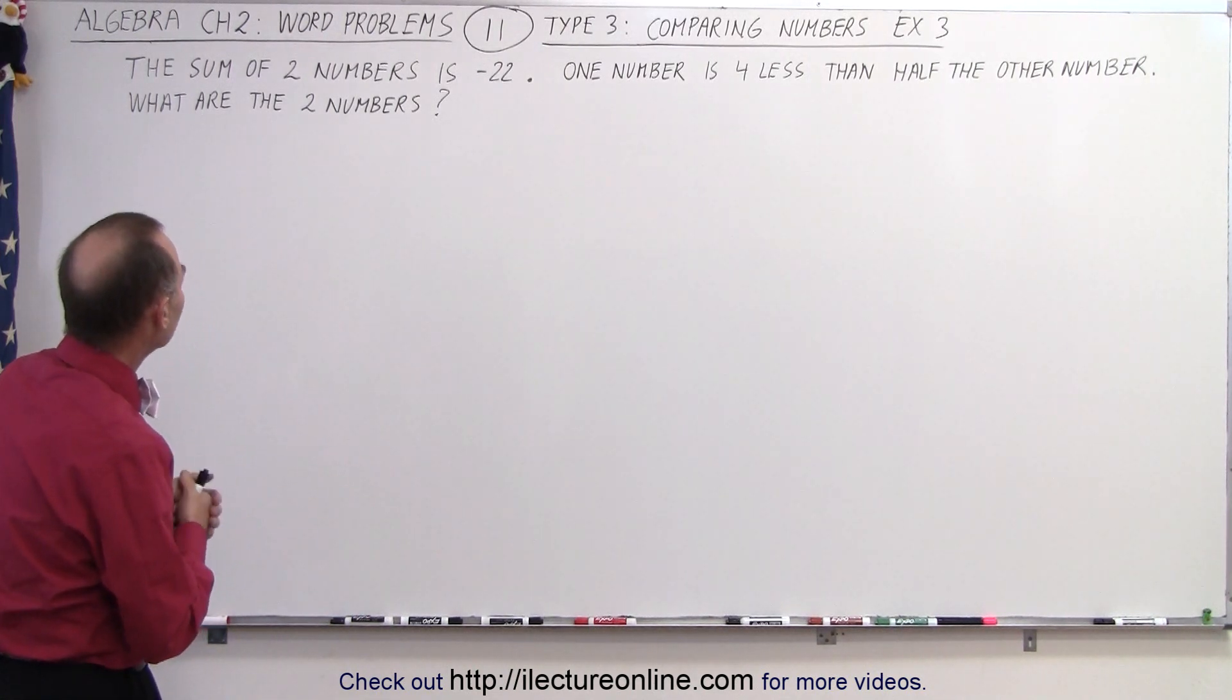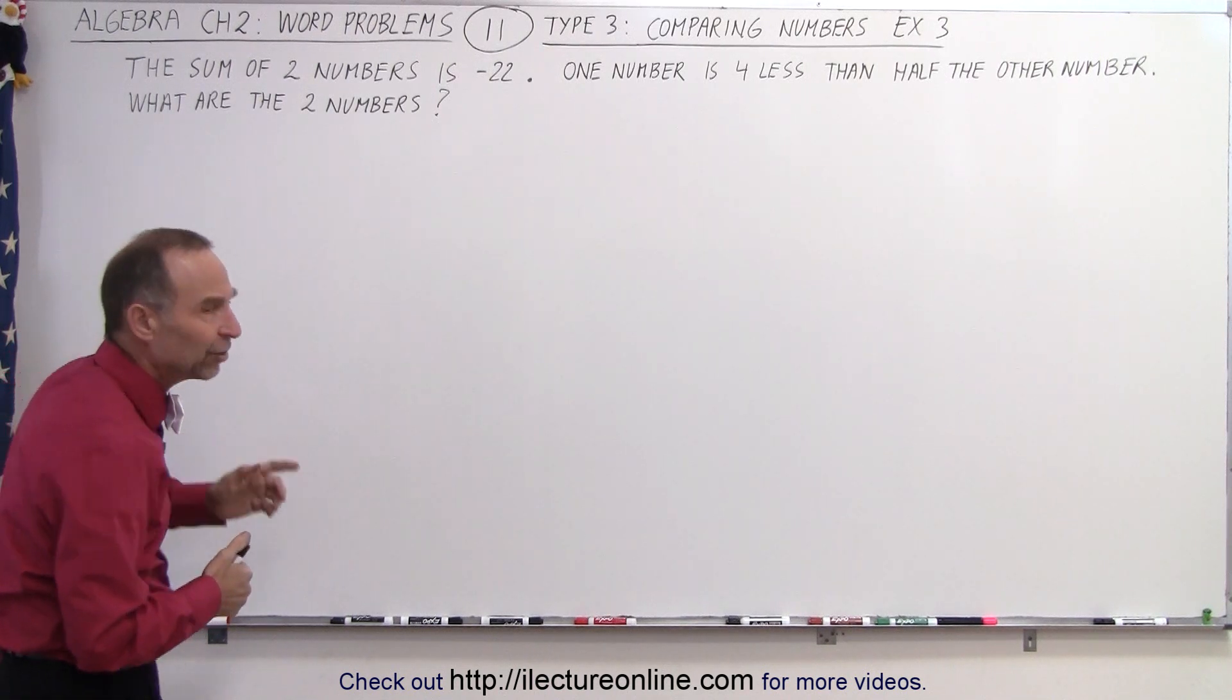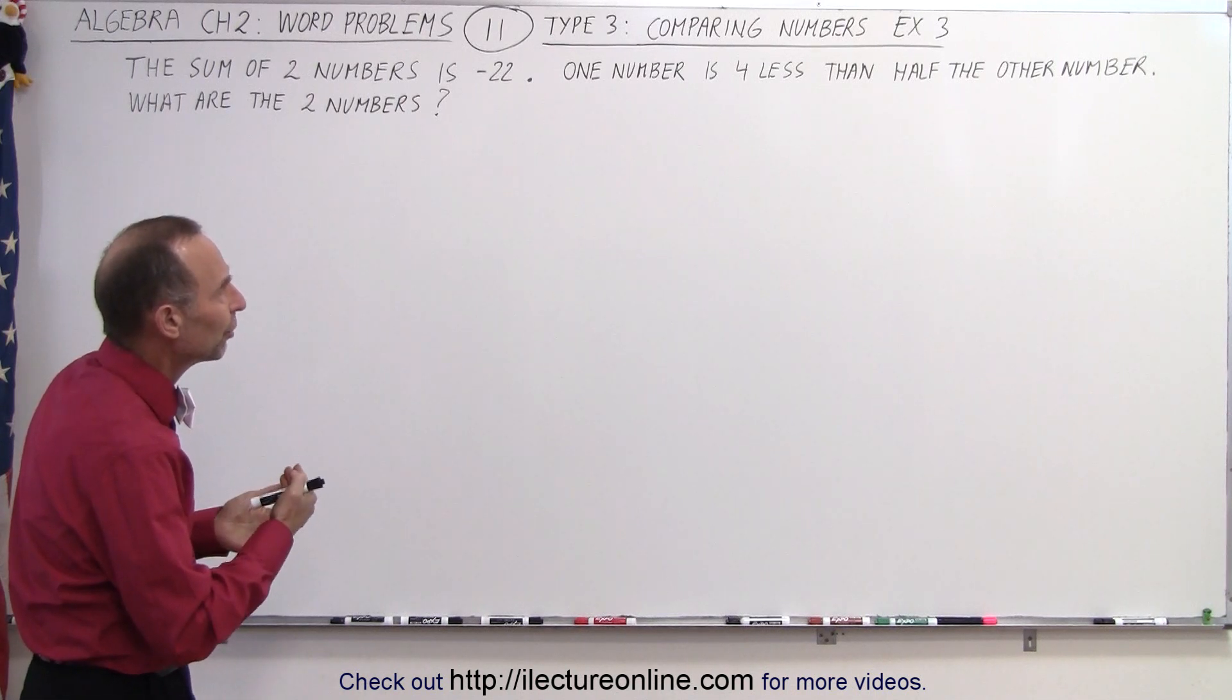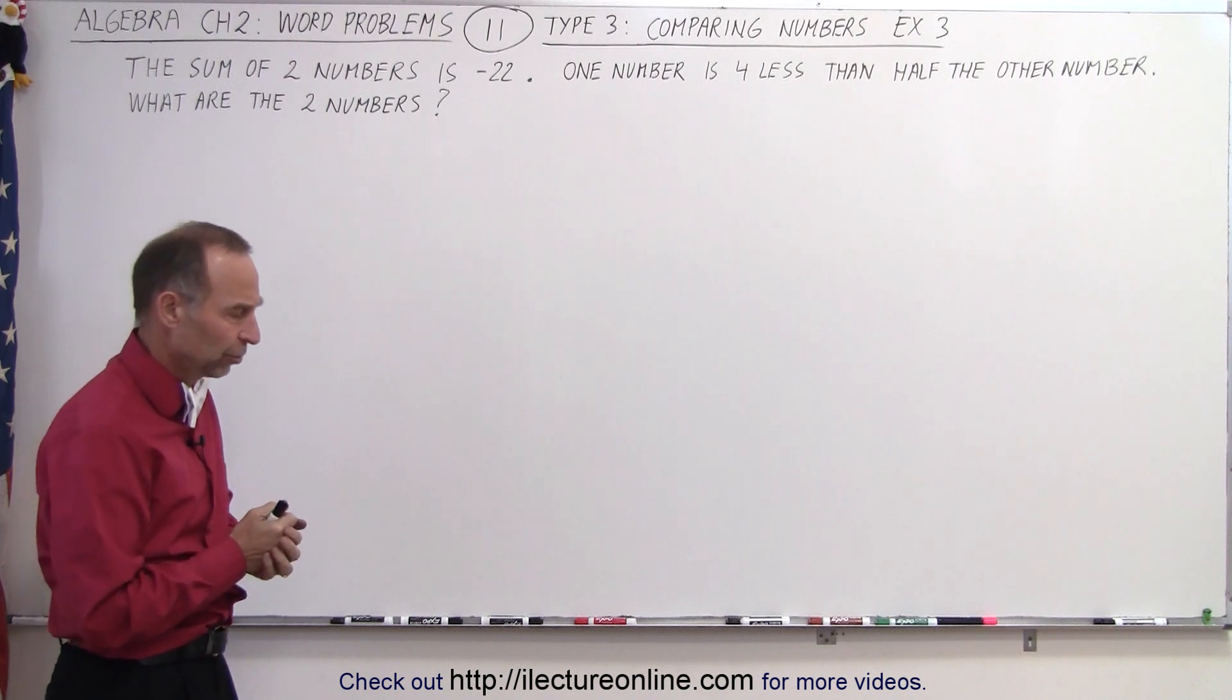The reason why it's tricky is because it says here that the sum of two numbers is minus 22, and then it says that one number is four less than half the other number. Find the two numbers.